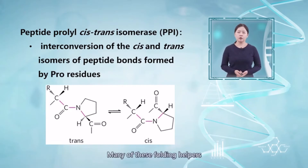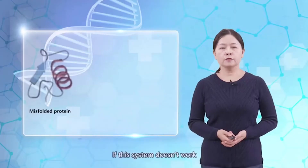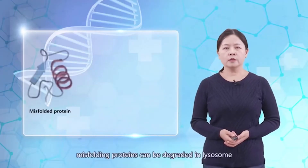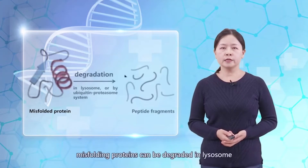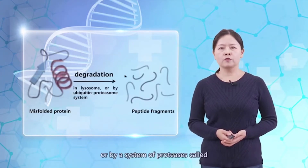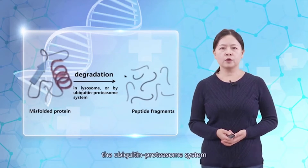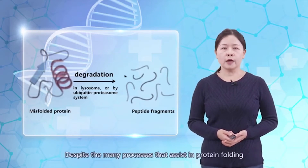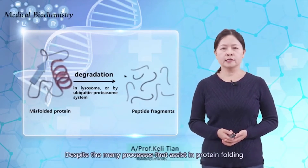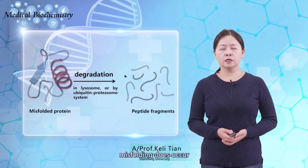Many of these folding helpers can function to refold proteins that become transiently unfolded. If this system doesn't work, misfolded proteins can be degraded in the lysosome or by a system of proteases called the ubiquitin-proteasome system. Despite many processes that assist in protein folding, misfolding does occur.